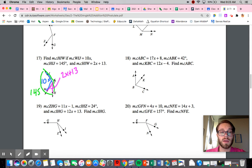So let's look at what we know. So we know that the entire large angle is 145 degrees. And we know it's made up of two smaller angles. So HIJ is made up of HIW, angle HIW, and angle WIJ. So we can add